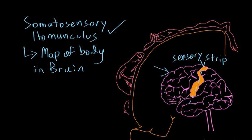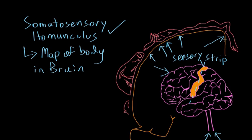Information that comes from your hand to the brain will all end up in one part of the sensory strip. Information from your finger will come over here; information from these other fingers will come over here. Information from the palm of your hand will come over here, and information from your wrist will end up over here in the sensory strip. Similarly, information from your foot would synapse over here in this part of the cortex, and information from your toes would synapse over here.